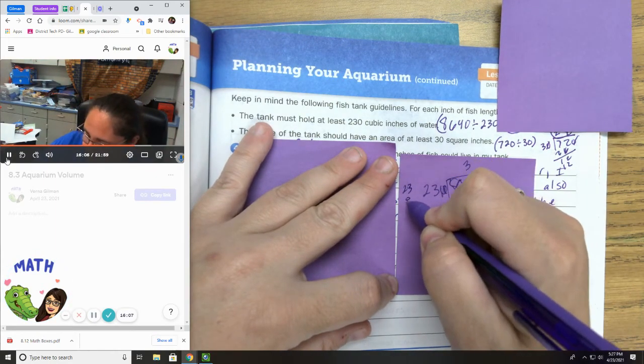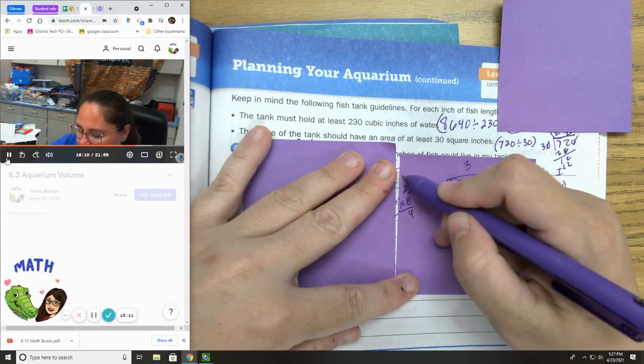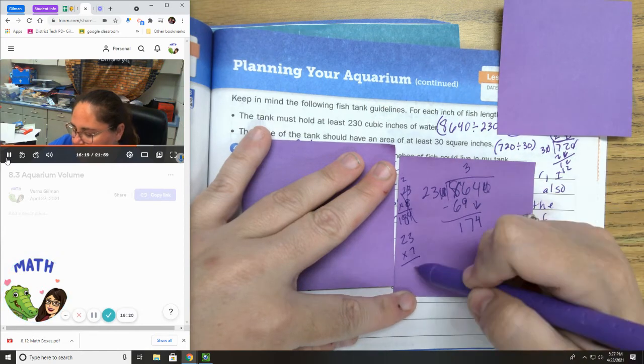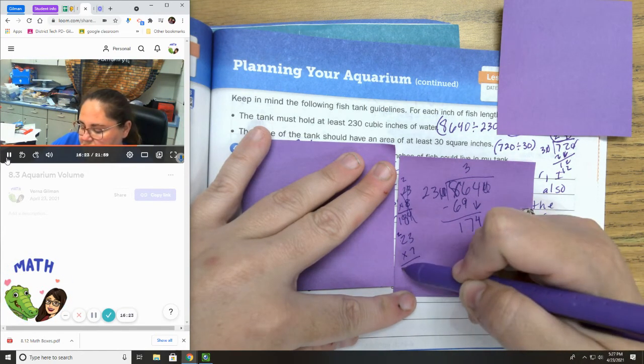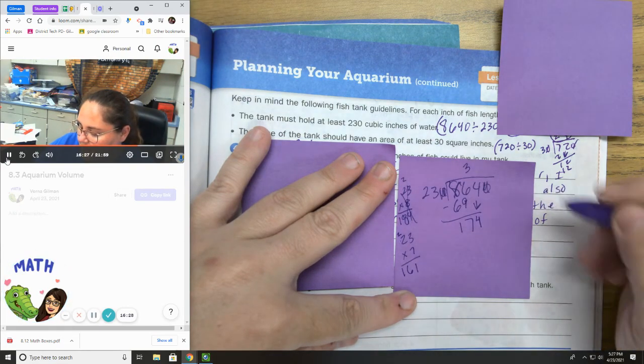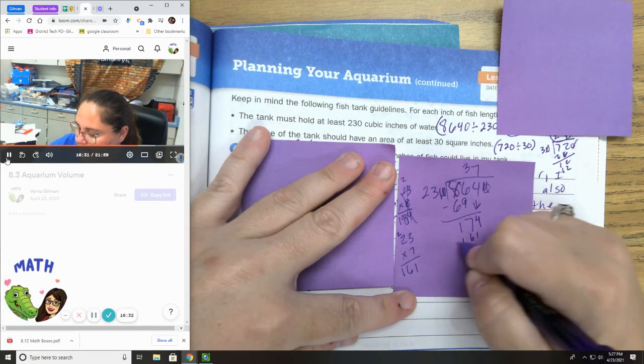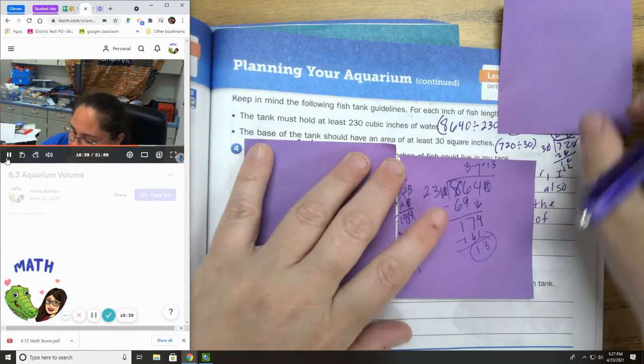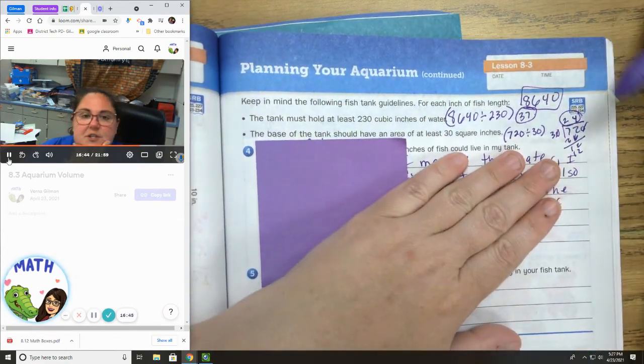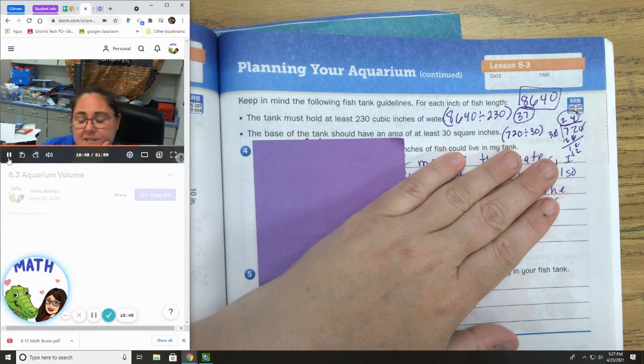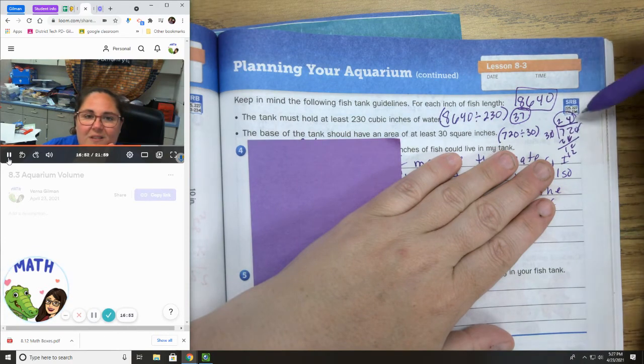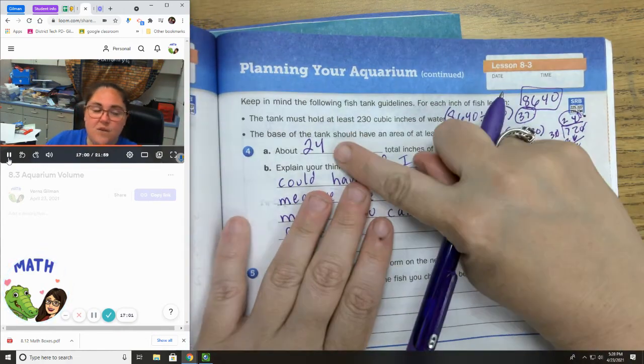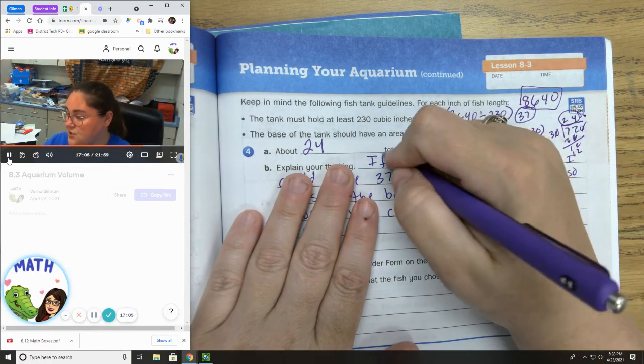Let's multiply 8 times 23. 8 times 3 is 24. Carry my 2. 8 times 2 is 16. Nope. That's 18. That's too much. 23 times 7. Let's try it. 7 times 3 is 21. 7 times 2 is 14. Plus 2 is 16. Oh, there we go. 37 with 13 inches left over. Now, according to the water, I can have 37 fish. But according to the base, I can only have 24. So I have to go with the smallest amount. So for this fish tank, I can only have 24 fish. So 24 inches of fish could live in my fish tank.